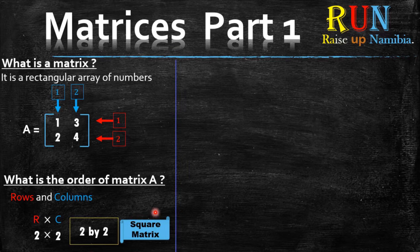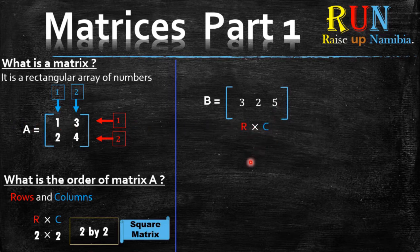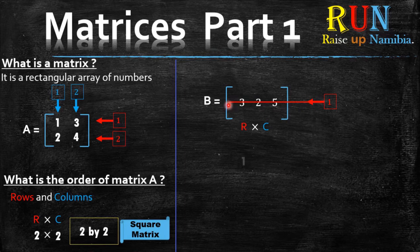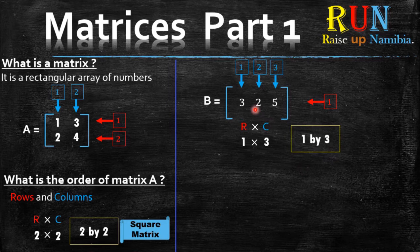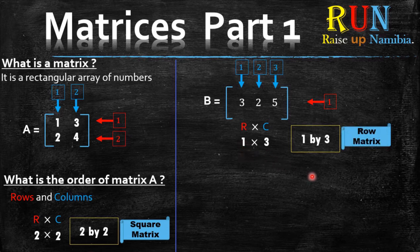Let's take a look at another example — matrix B over here. If you had to find the order, what would that be? So let's bring out our R multiplied by C, and ask ourselves how many rows and columns does this matrix have. It has one row, so we write that one down, multiplied by how many columns? The columns are always the vertical ones, so let's count: one, two, three. So it has three columns — it's a one by three matrix. Whenever you see that a matrix has one row, that matrix is called a row matrix.